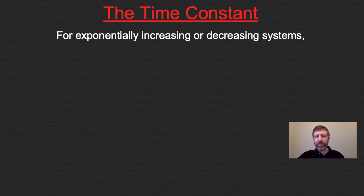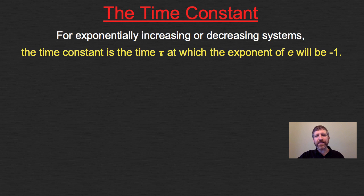Now let's take a closer mathematical look at this. To simplify this idea: for exponentially increasing or decreasing systems, the time constant is just the time tau at which the exponent of e will be negative one. That's all it is.